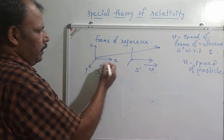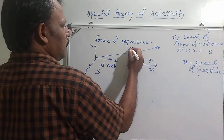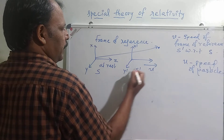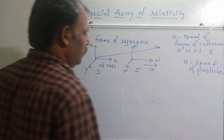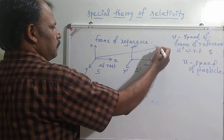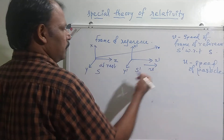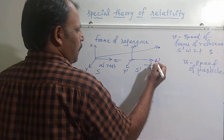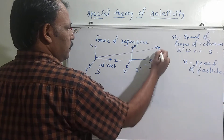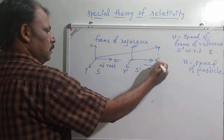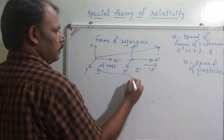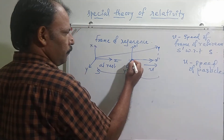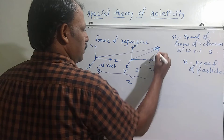For frame S prime, I am taking coordinates X prime, Y prime, Z prime. Now we mark the coordinates of this particle with respect to S and with respect to S prime. With respect to S, this distance will be the Z coordinate. With respect to S prime, this origin is the origin of S prime, so the Z distance with respect to S prime I am representing as Z prime.